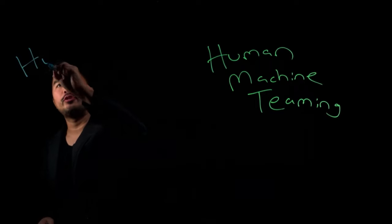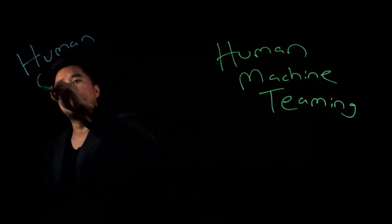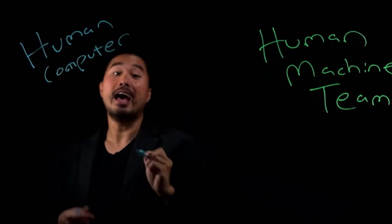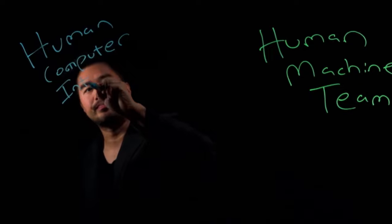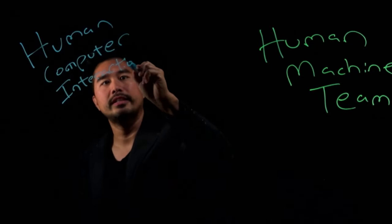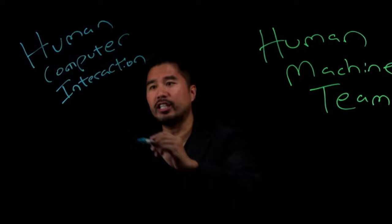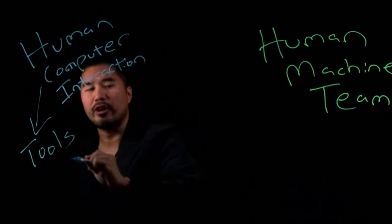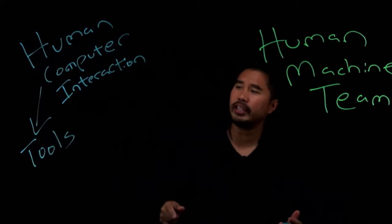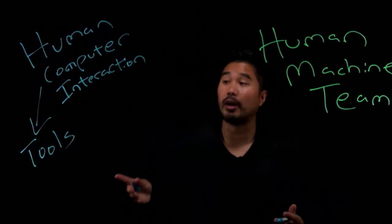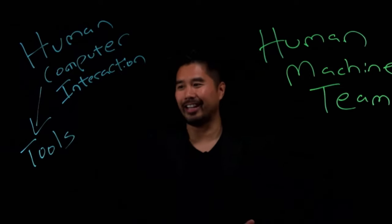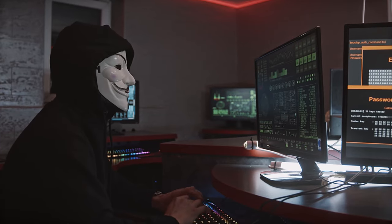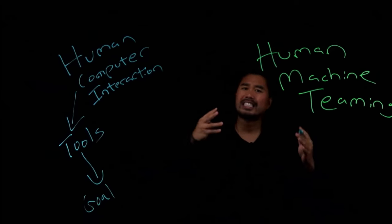In the past, we heard of a term called human computer interaction. This is essentially level one. Using computers as more tools for humans to really be able to accomplish a task or something. We're using a tool to really complete a goal. So that's level one, we could call this level one to really start.